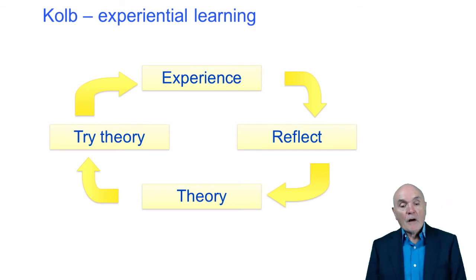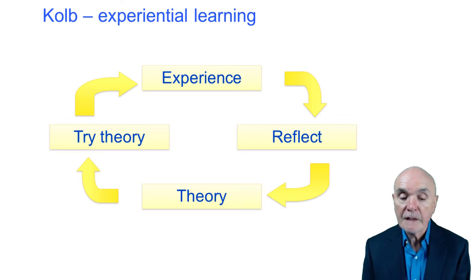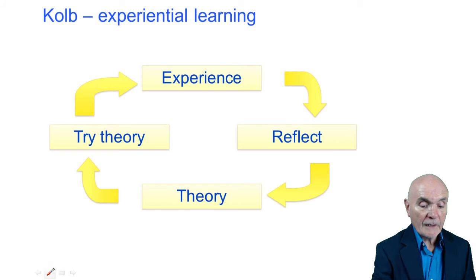The second theory is that of Kolb and what they called experiential learning. Kolb says that we learn little by little and by experience. So let's say our experience was that we pitched to a client and we didn't win the contract. Nasty experience. So what we do is we go away and reflect on that.